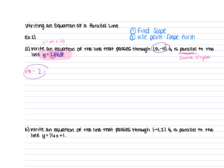Now we use the point and our slope and put it in point-slope form, since we were given a point and a slope. Point-slope form is y minus y1 equals m times (x minus x1). Plugging in: y minus negative 4 equals 2 times (x minus 5). Simplifying — minus a negative becomes a plus — so y plus 4 equals 2 times (x minus 5). This is our equation of a line.